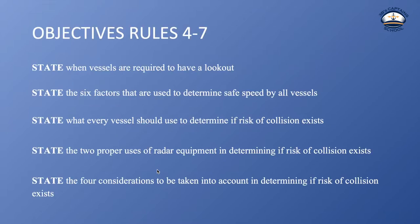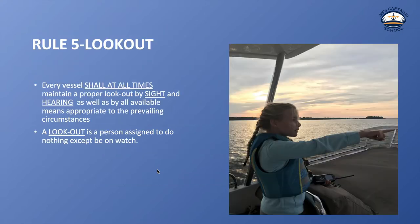Our objectives for rules 4 through 7: we're going to state when vessels are required to have a lookout; state the 6 factors used to determine safe speed; state what every vessel should use to determine if a risk of collision exists; state the 2 proper uses of radar equipment in determining risk of collision; and state the 4 considerations in determining whether a risk of collision exists.